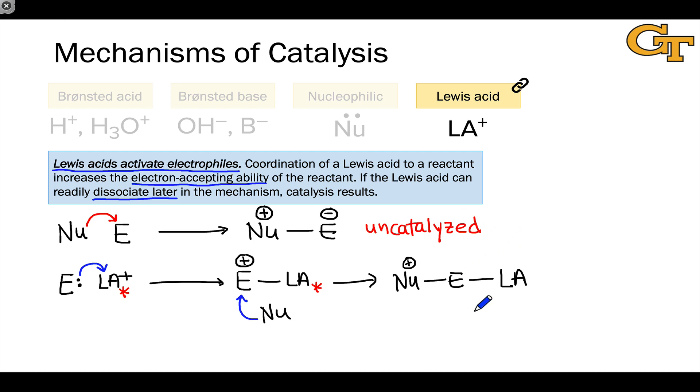To regenerate the Lewis acid catalyst and generate the product, we need to de-coordinate or dissociate the Lewis acid from this intermediate. This step generates the product, the same product as in the uncatalyzed process, and regenerates the catalyst LA+, which can engage with another molecule of electrophile to restart the cycle.